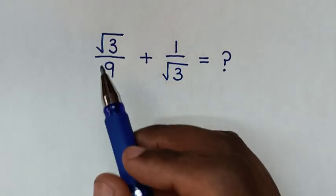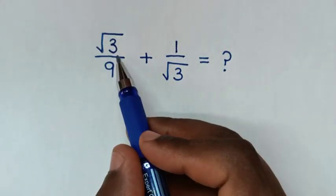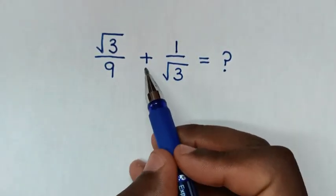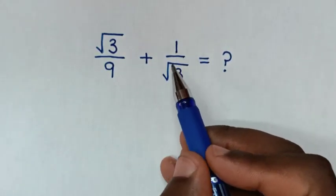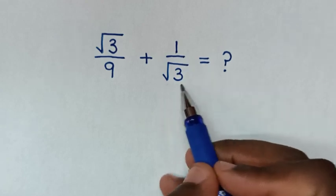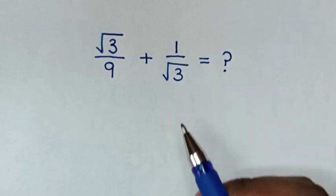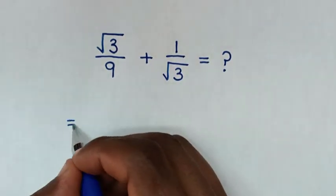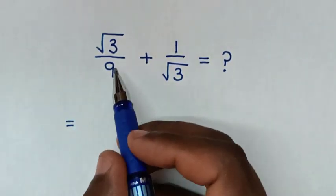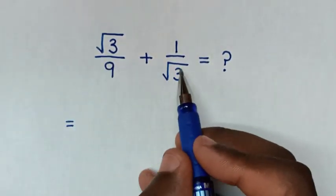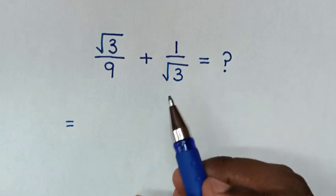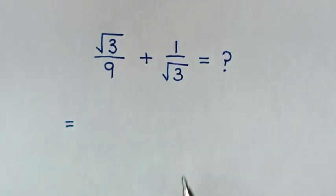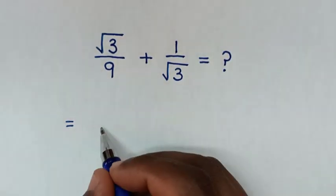Hello. How to solve square root of 3 over 9 plus 1 over square root of 3. It will be equal to — from these denominators, there will be 9 times square root of 3.